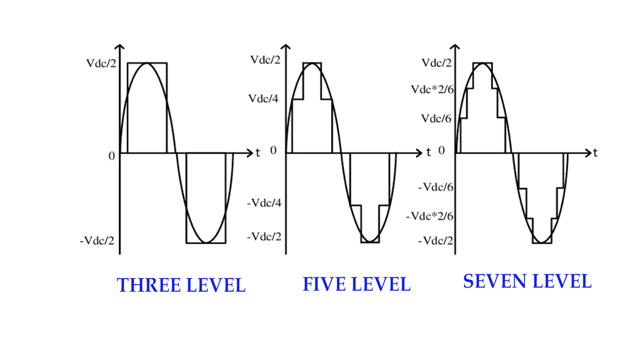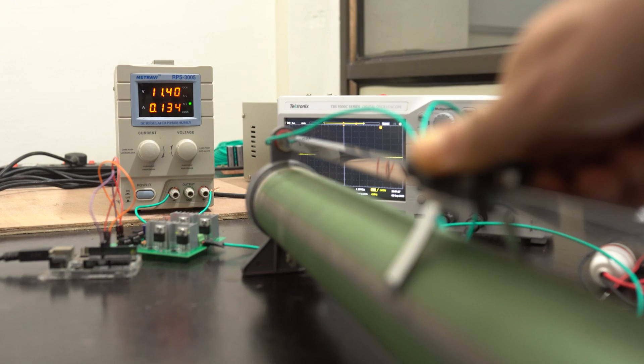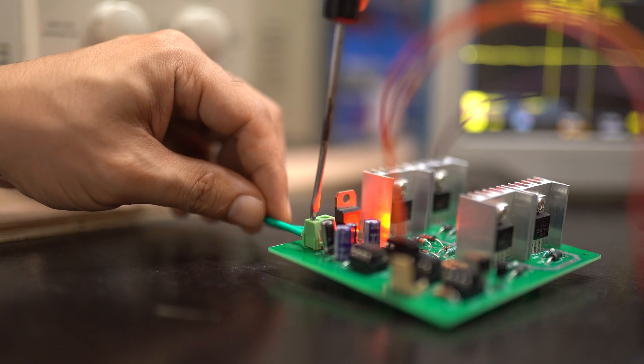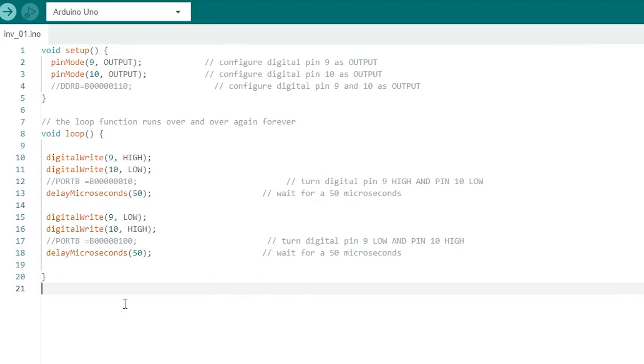You can also build a three-level, five-level, and even seven-level inverter using this module. For the first test experiment, let us set the DC voltage and give supply input to the INV-01 inverter module. We will upload a simple blink program for switching digital pins 9 and 10 at 10 kilohertz.